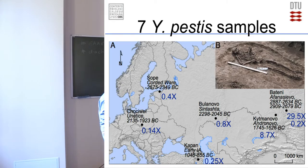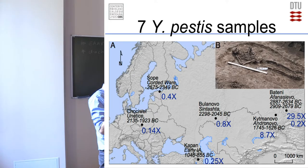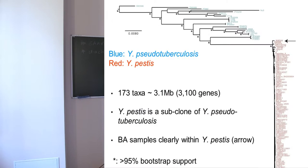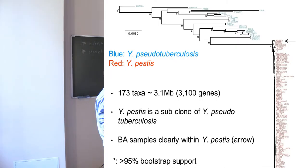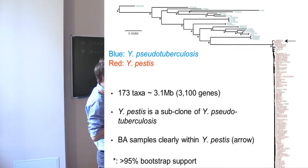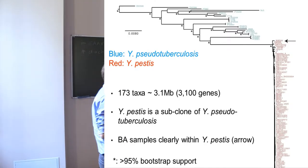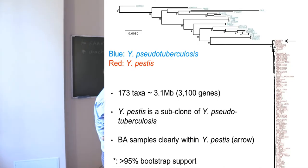Since we knew this would be a quite big finding, we also went through extensive tests to make sure we were not just finding pseudotuberculosis or some other bacteria that just happened to look like pestis — and that all looked really nice. We then went into the data and tried to reconstruct the phylogenetic tree. At the top we have pseudotuberculosis strains, and all the red ones are plague strains. It's really obvious that plague is basically just a subclone of pseudotuberculosis, and there's no doubt that our Bronze Age samples are truly within the plague clade.